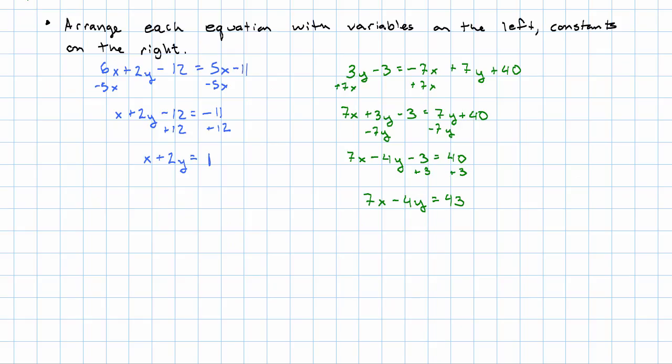So, now our system becomes x + 2y = 1 and 7x - 4y = 43. Now we're ready to solve normally. Now we have just an ordinary system of equations set up for elimination. Looking at this, I think that it's going to be easy to eliminate y.